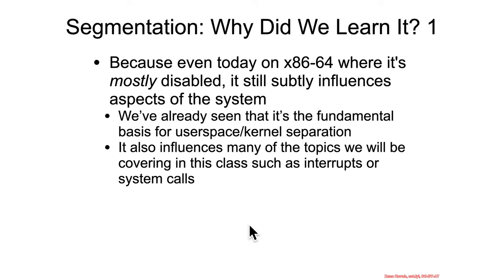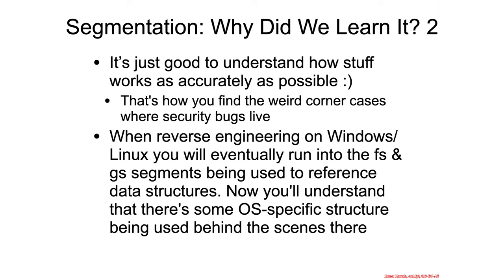So it's still important even though it ostensibly got neutered as part of the x86-64 upgrades. It's also very important to understand how things work at a deep level — this is where you find the weird corner cases, like in that INSQ blog post. Also, if you reverse engineer Windows and Linux, you'll oftentimes run into explicit usage of the FS and GS segment registers. Now that you understand segments better, you'll understand that AMD left FS and GS working specifically so operating system makers could use them and put data structures at those segments, because they had already been doing it before the 64-bit systems.